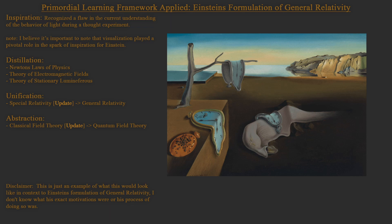So he had a vision about traveling at the speed of light that conflicted with the current understanding of light, the behavior of light. And from that, he distilled the principles, the laws determining the motion, the behavior of light—so that's Newton's laws of physics, theory of electromagnetic fields, and theory of stationary luminiferous ether. And took that, unifying that into Special Relativity, which was then updated to General Relativity.